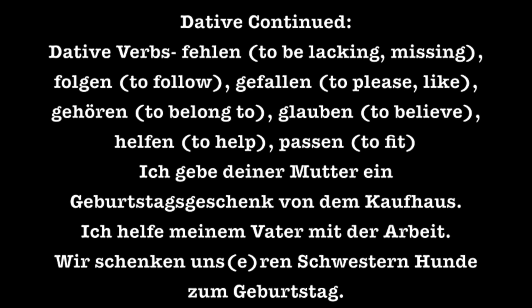Ich helfe meinem Vater mit der Arbeit — I help my father with the work. In this case, we used a dative verb, helfen, which means that meinem Vater must be in the dative case. Mit is a dative preposition, so instead of saying die Arbeit, we say der Arbeit. Wir schenken unseren Schwestern Hunde zum Geburtstag — We are giving our sisters dogs for the birthday. Notice that there's an N at the end of Schwestern because in the dative plural, nouns take an N at the end. Hunde is the accusative direct object, and zu is a dative preposition, giving us zum Geburtstag.